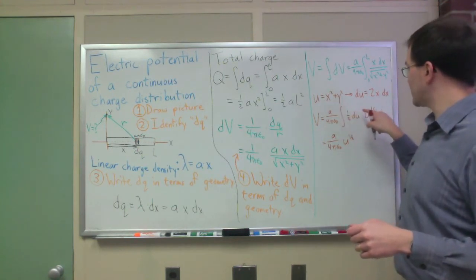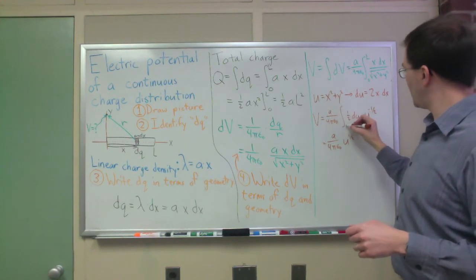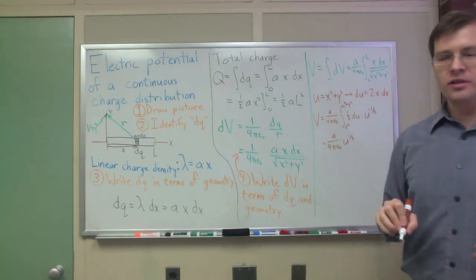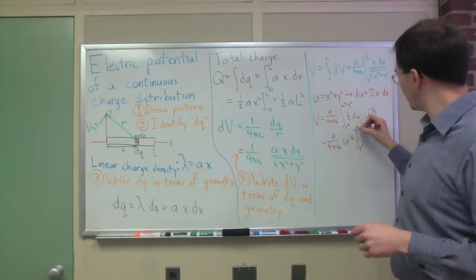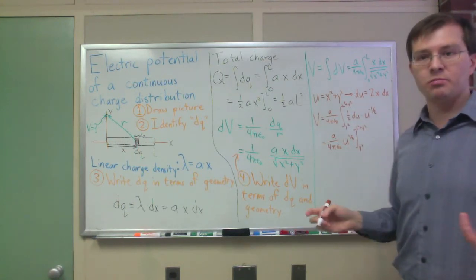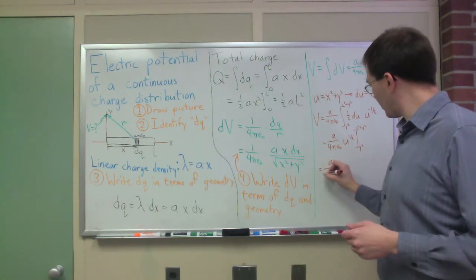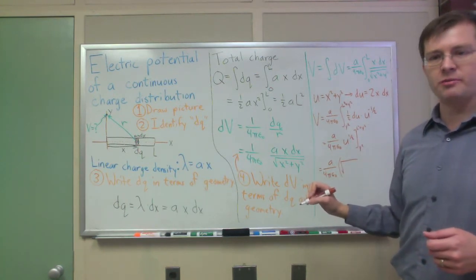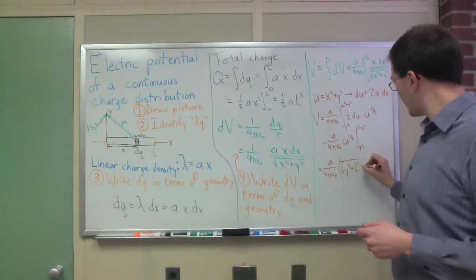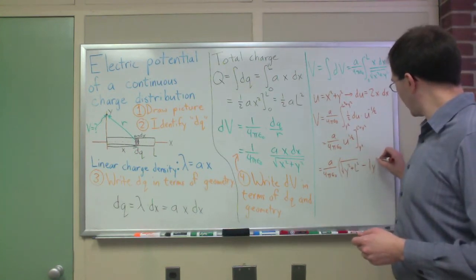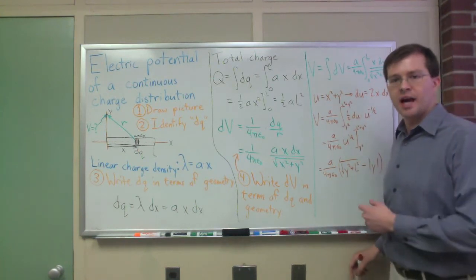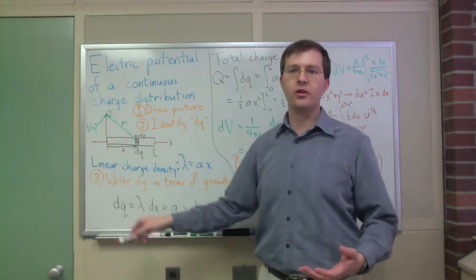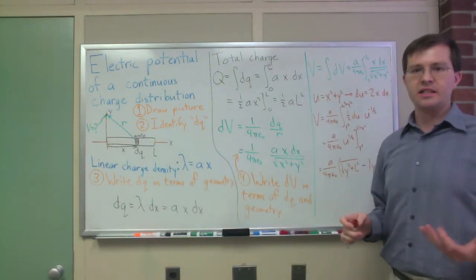It turns out that u to the minus one half is exactly the derivative of u to the one half, so this equals a over four pi epsilon naught u to the one half. Limits of integration, that's important. When I change from x to u, my x equals 0 limit turns into a lower limit of y squared, and my x equals L limit turns into L squared plus y squared. I can do that. I just plug in those limits. I get a over four pi epsilon naught times square root of y squared plus L squared minus absolute value of y. One thing to notice is that it's all in terms of the absolute value of y.